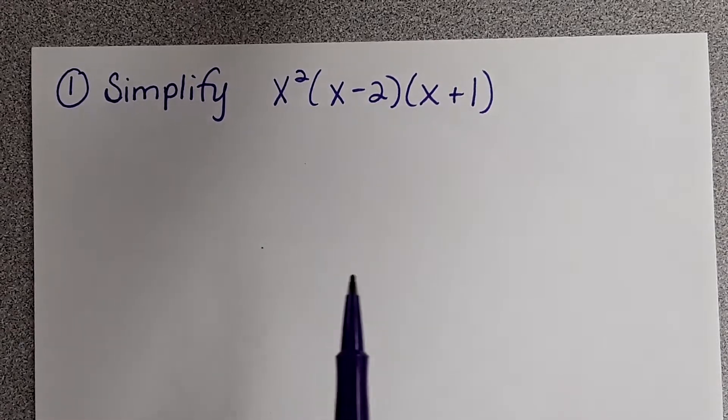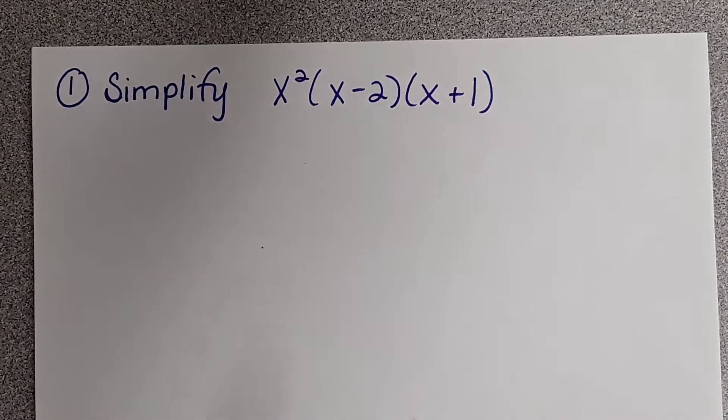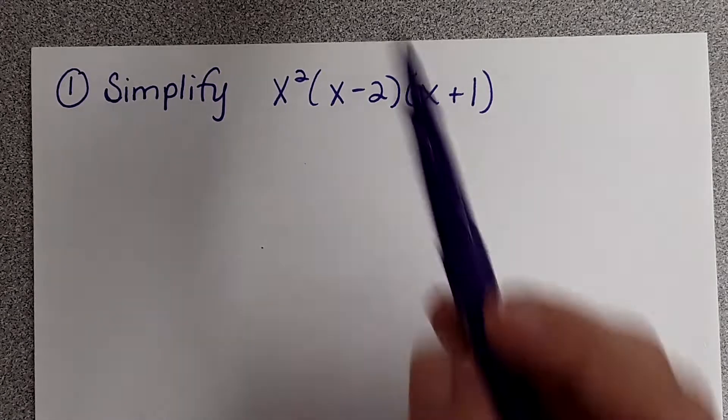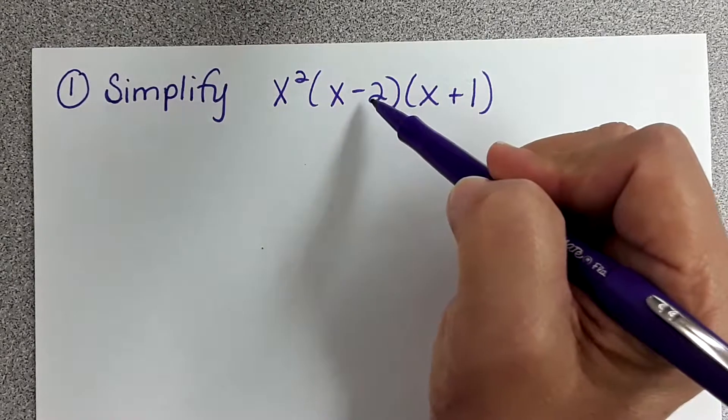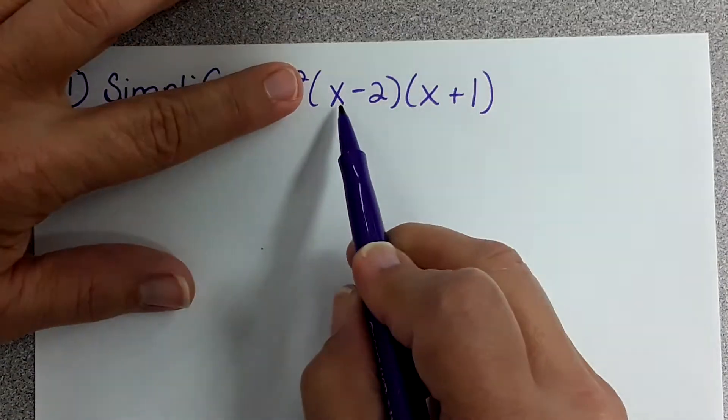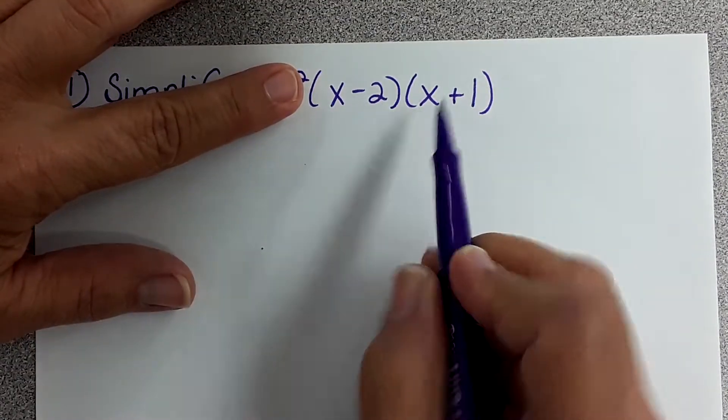So in this problem, you guys, what I would do - there's two ways you can do this problem. You can multiply x squared times x and x squared times 2, or you can multiply x minus 2 times x plus 1. Do that FOIL.